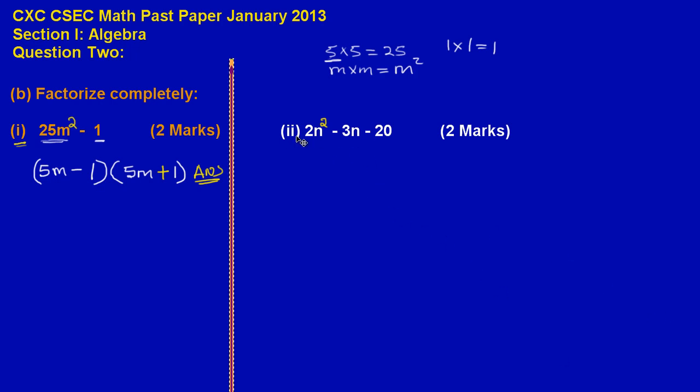Now in part 2 they gave us 2n² - 3n - 20 and they're asking us to factorize also. This is what you call a quadratic expression, so we're going to have to use the AC method to do some quadratic factorization.